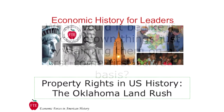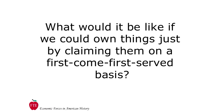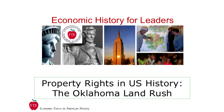What would life be like if we could own things just by claiming them on a first-come, first-served basis? This simulation lets students consider that question by simulating the rationing of land in American history — the Oklahoma Land Rush of 1893. As student boomers engage in the chaos and excitement of racing for land, they participate in a common experience they can analyze and evaluate afterwards. The debriefing highlights the largely unrecognized costs of this method of rationing property rights in the American West.